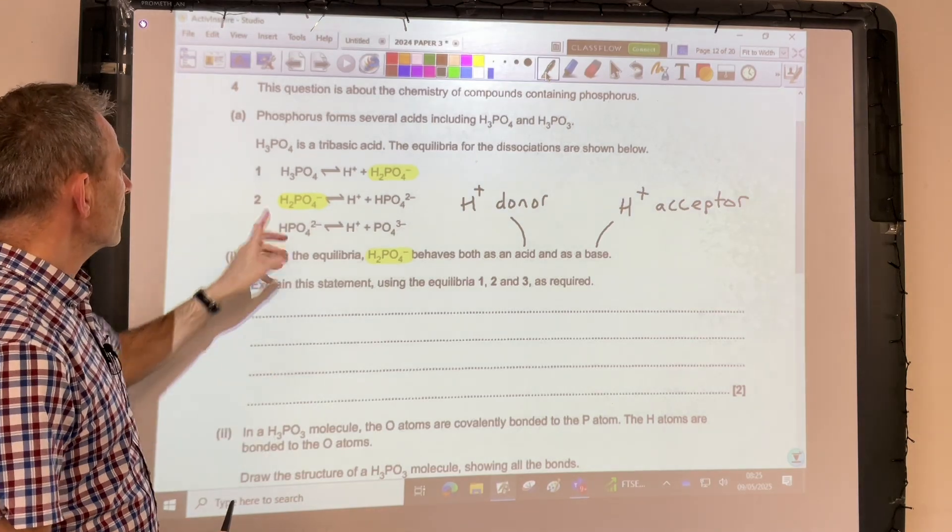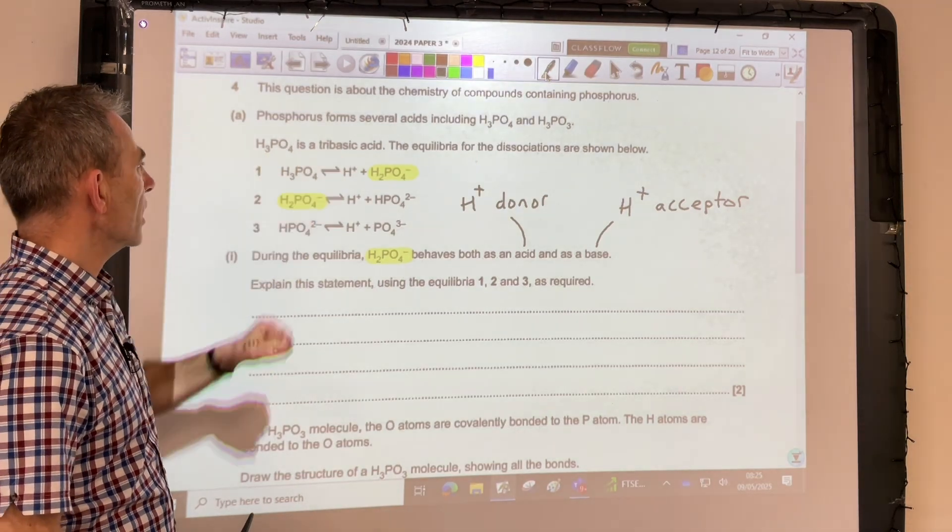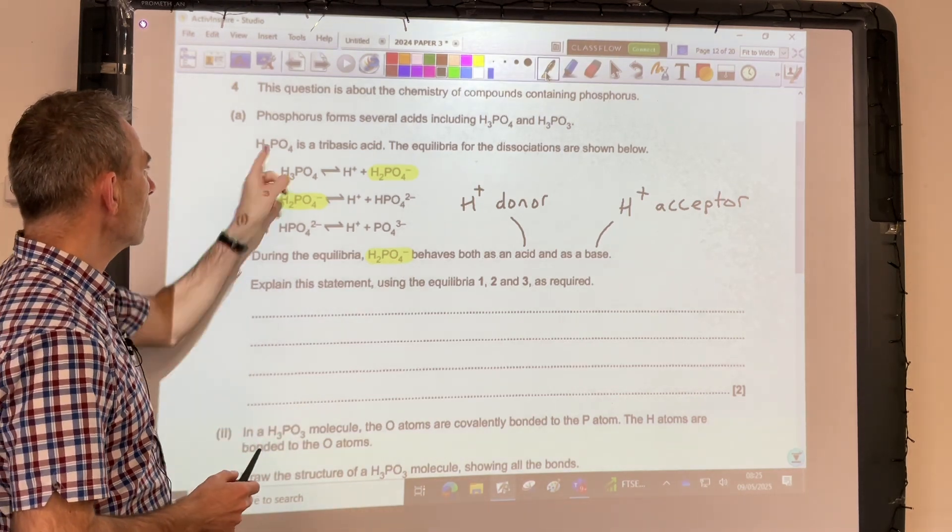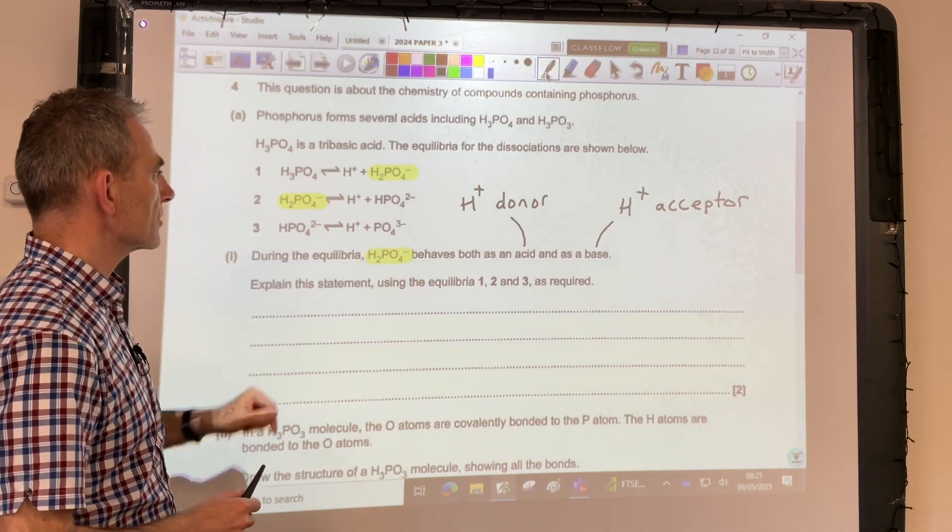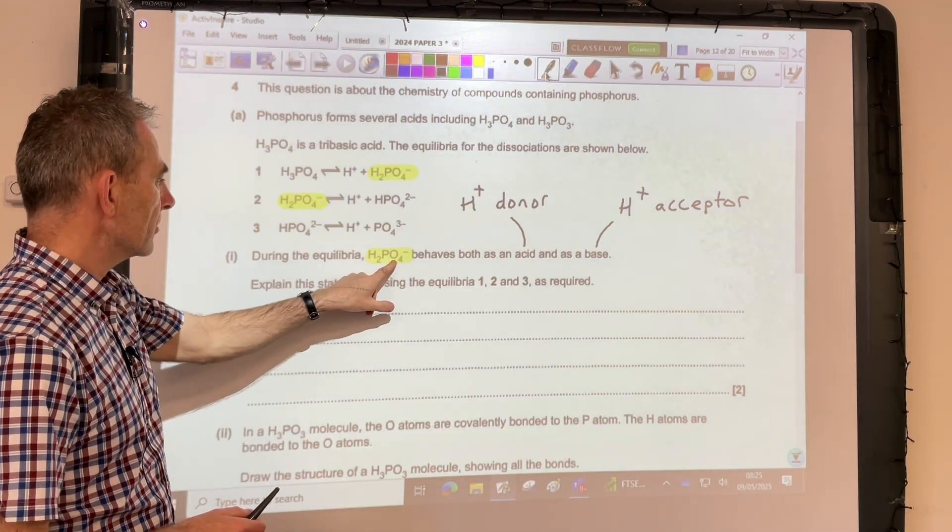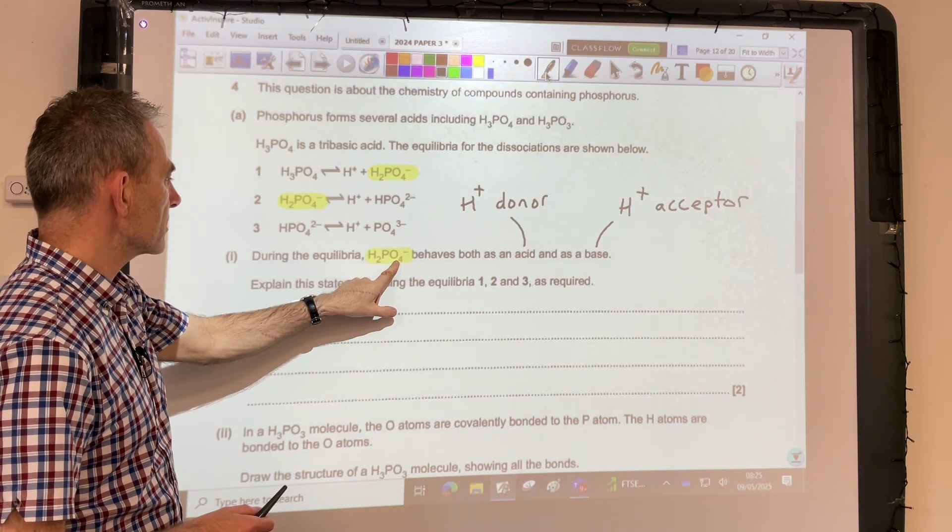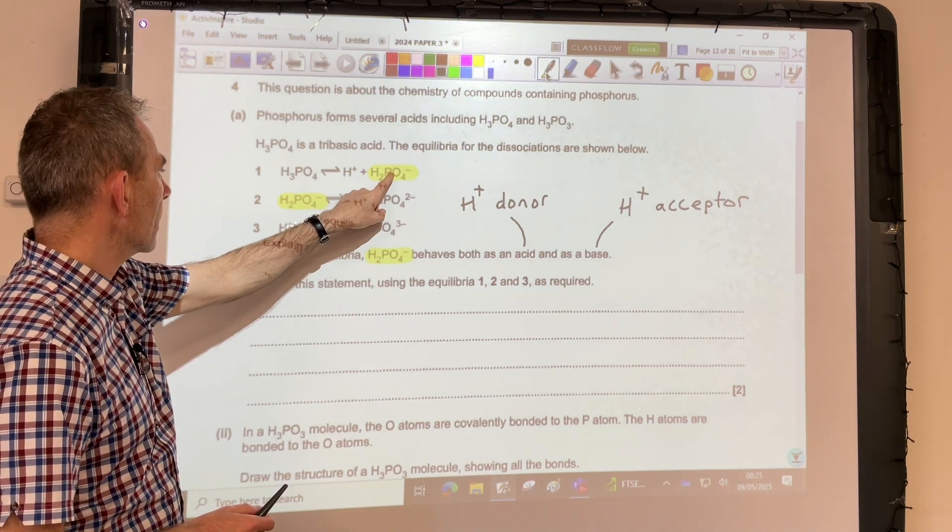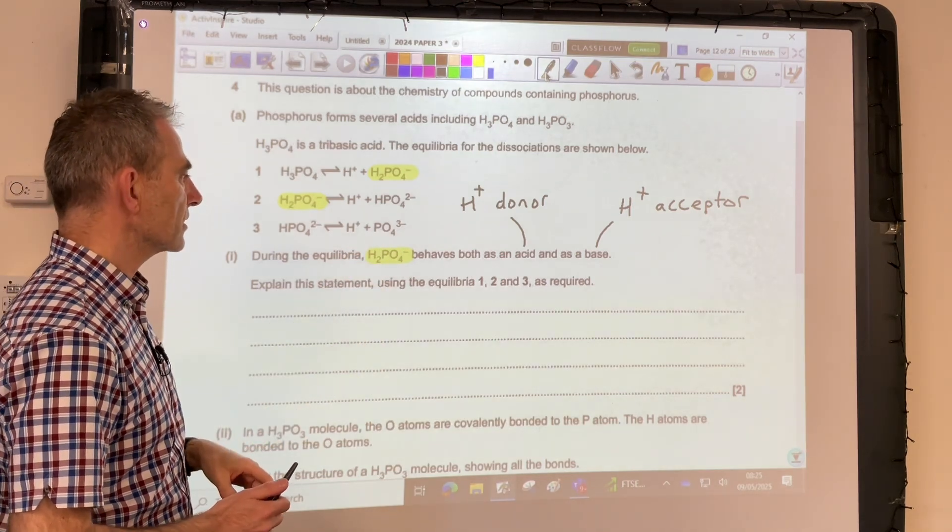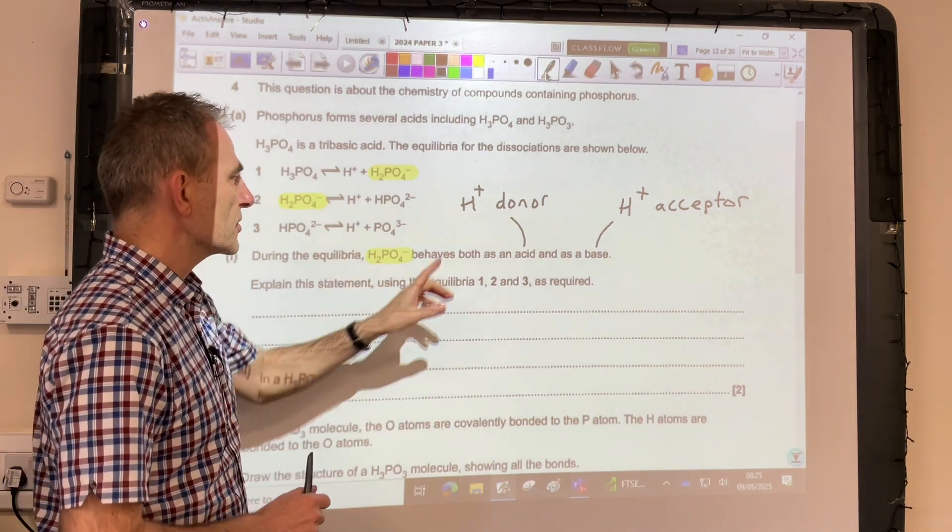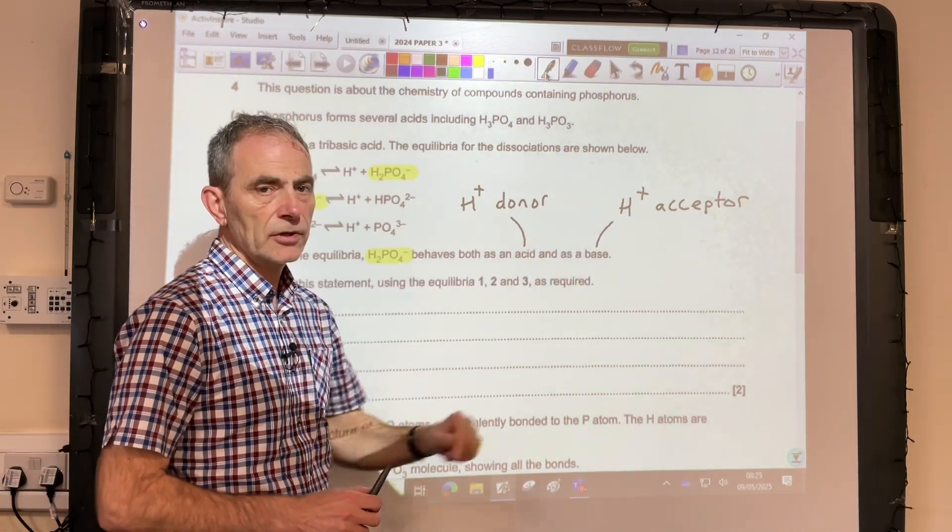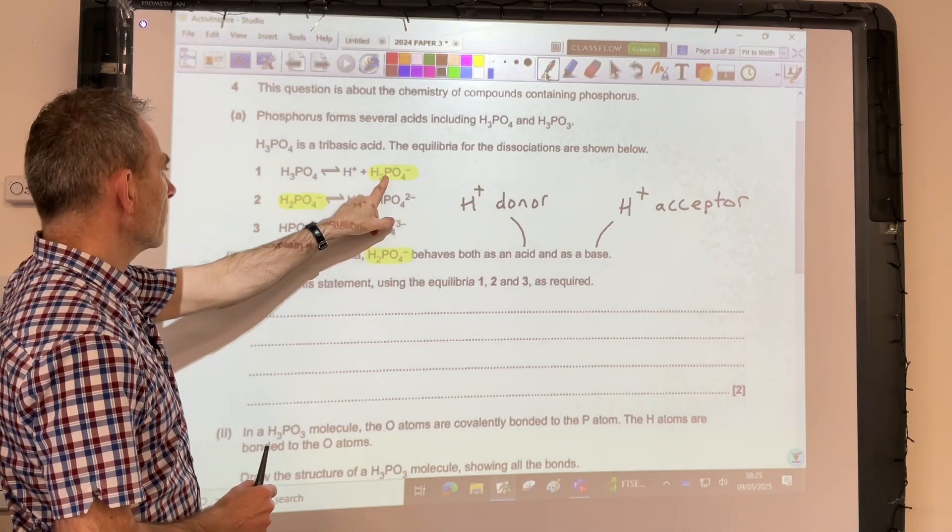So first part of it, we've got some information about H3PO4, it's a tri-basic acid that donates 3 moles of protons per mole of the acid, and we've got the 3 dissociations involved. I've just highlighted this H2PO4- that we're interested in, so it's in that equation there and in that one there, and we've got to show why it's acting as both an acid and a base. So just a reminder, an acid is a proton donor and a base is a proton acceptor.